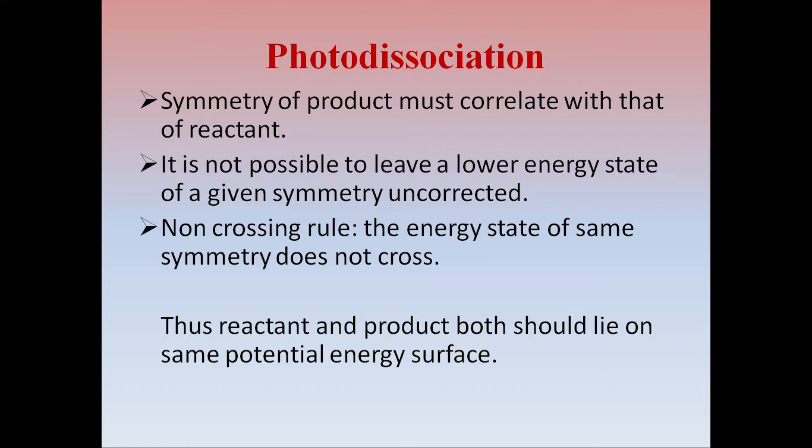The symmetry correlation rules are used to predict the energy state of product particles. These rules are: first, the symmetry of product must correlate with that of reactant; second, it is not possible to leave a lower energy state of a given symmetry uncorrected; third, non-crossing rule - the energy states of same symmetry do not cross. Thus, the reactant and product both should lie on same potential energy surface.